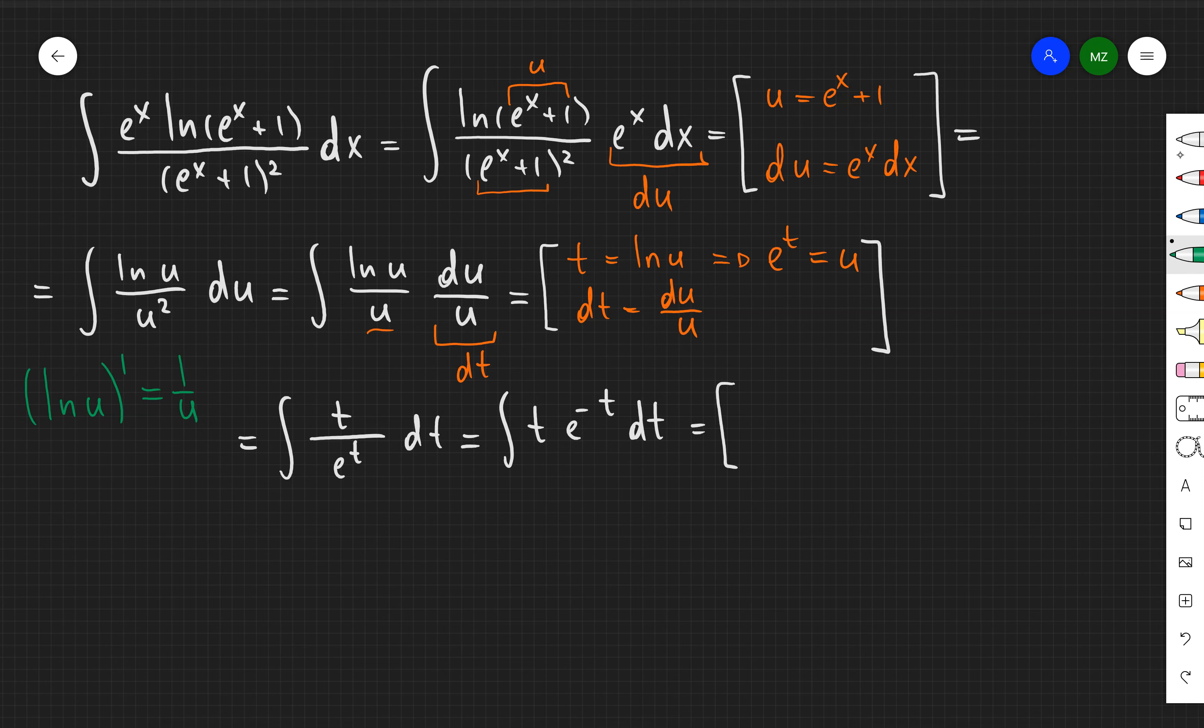So that's why I'm going to have t over e to the t times dt or in other words t times e to the power of negative t and I need to apply integration by parts.